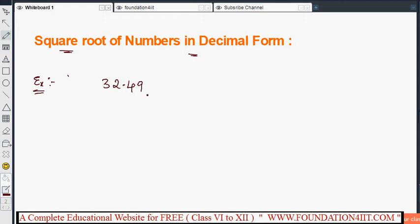I need to find out the square root of 32.49. If it's in decimal form, after the point there should be even digits. In case it is an odd digit, we will add an extra zero. Then we can make it and find out the square root. So let us find out. Same method will apply.